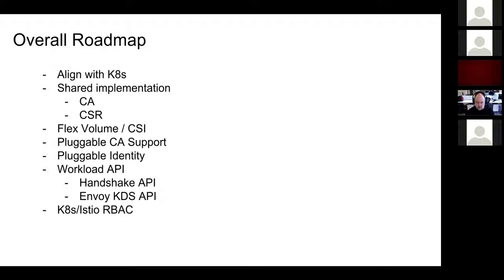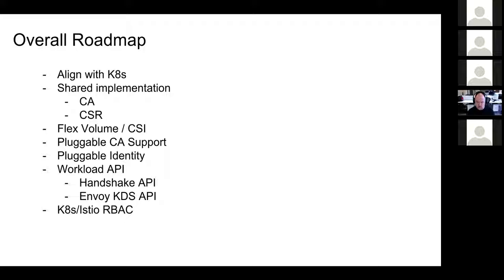Besides that, what TLS domains you trust really does come down to it being a platform feature to inject those somewhat orthogonally to the service account secret. We also want to leverage this working group to work with a flex volume and CSR. We have pluggable CA support and pluggable identity. In terms of the node agent API — also called the workload API — we have a regular CSR or we can do the handshake API.